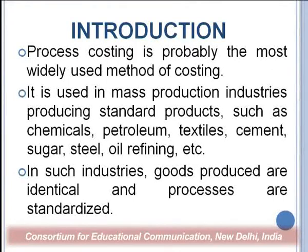These types of industries use process costing. For example, in the chemical industry, when you process chemicals, you put in a similar type of input and it is processed in mass bulk quantity, producing a standardized product. The output of one process becomes the input of the other process, where each process is a different cost center.